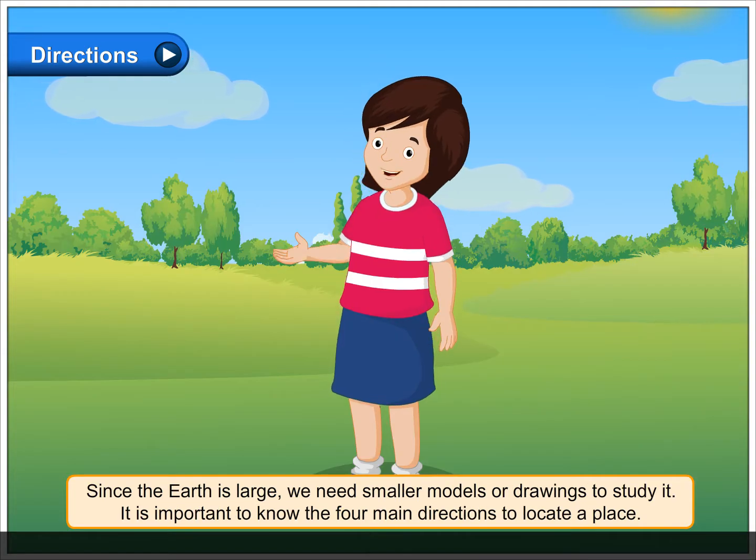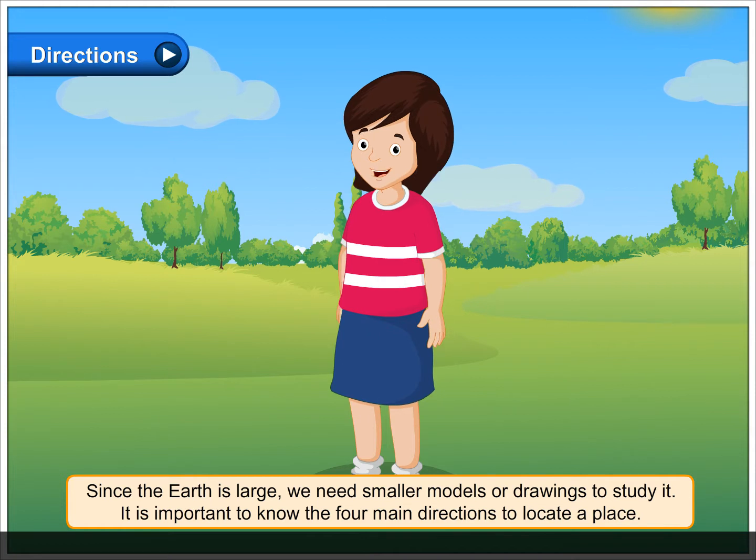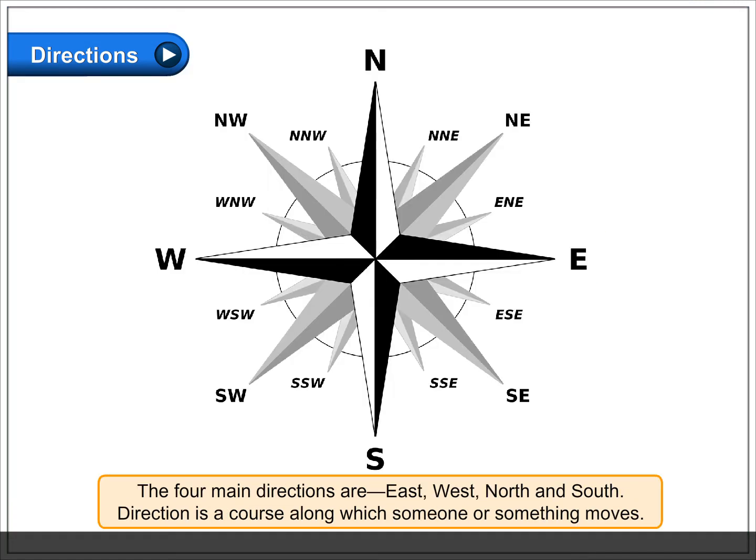Since the earth is large, we need smaller models or drawings to study it. It is important to know the four main directions to locate a place. The four main directions are east, west, north, and south. Direction is a course along which someone or something moves.